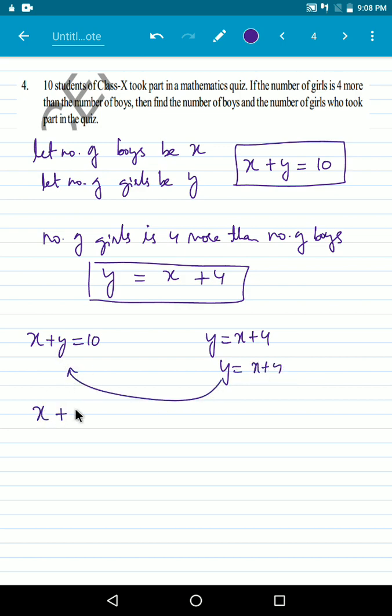So we have x plus y. y is equal to how much? x plus 4, equal to 10. So x and x is how much? 2x. Is equal to, let us send this 4 on the other side, it will become minus. So 10 minus 4 is 6.